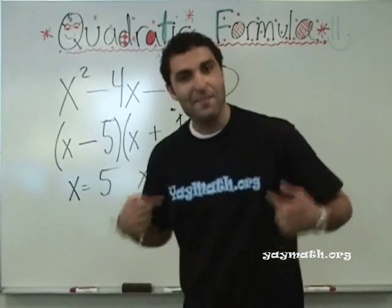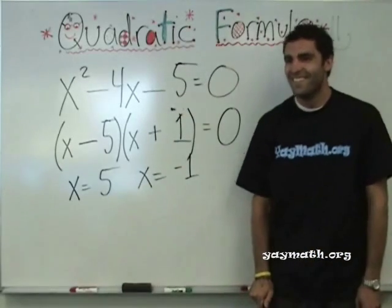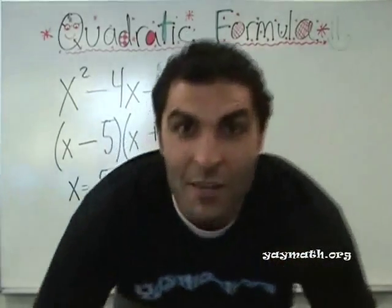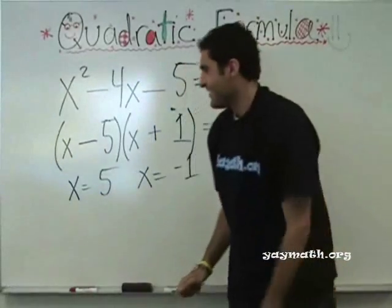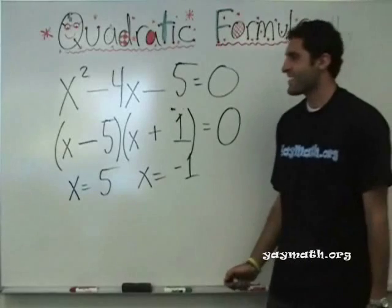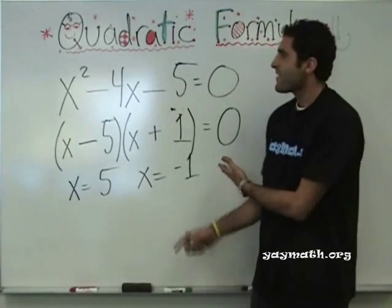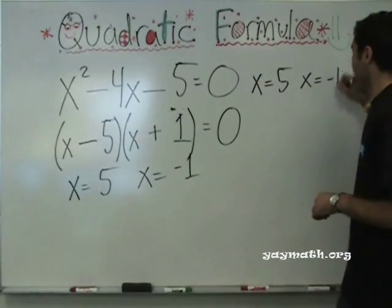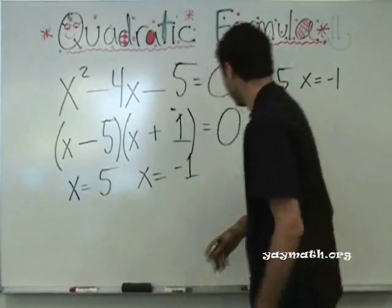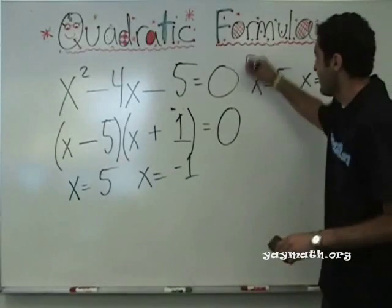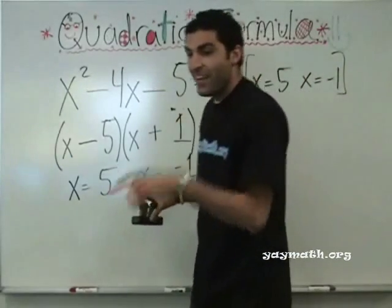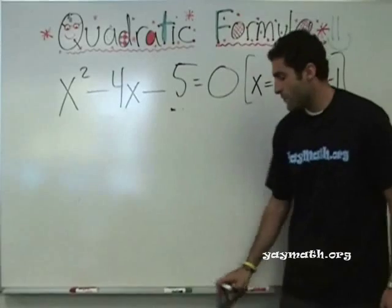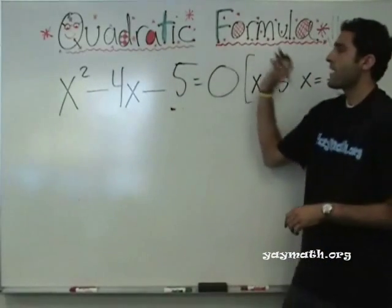For more, please check out the video on factoring on yaymath.org. Because people at home wish they were here. Do not try this at home or in class. Okay. So these are the answers. I'm going to write the answers here. X equals 5. X equals negative 1. The table almost fell. Okay. So this is off. New method. New method to get to these answers. Here it comes. It's called the quadratic formula.